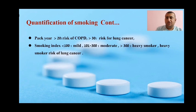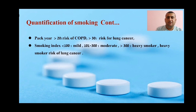Pack year is important: if the patient has more than 20 pack years, they are at risk of chronic obstructive pulmonary disease, and if more than 30, the risk of cancer increases. For smoking index: less than 100 is a mild smoker, 101 to 300 is a moderate smoker, and more than 300 is a heavy smoker who is at higher risk of developing lung cancer.